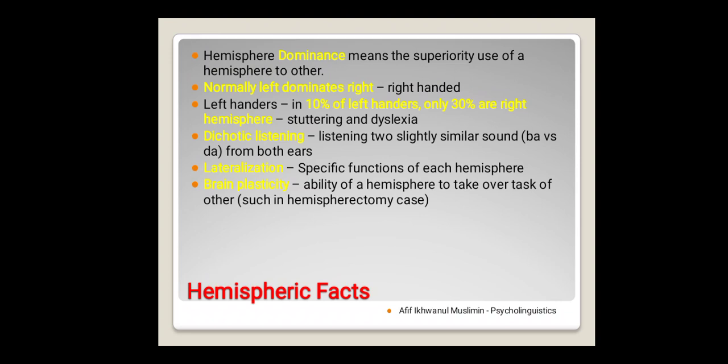But amazingly, after 10 months, then later it was tested at the age of 24, the child can speak correctly, good in writing. So it means that his right hemisphere took over the job of the left hemisphere.